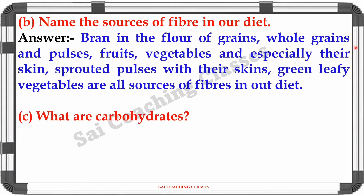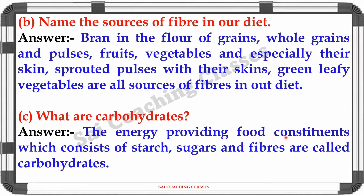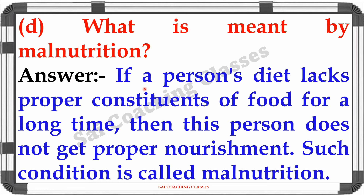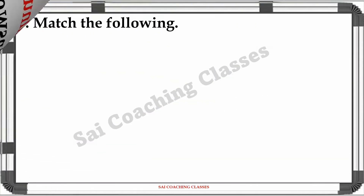C. What are carbohydrates? Answer: The energy-providing food constituents which consist of starch, sugar, and fiber are called carbohydrates. D. What is meant by malnutrition? Answer: If a person's diet lacks proper constituents of food for a long time, then the person does not get proper nourishment. Such a condition is called malnutrition.